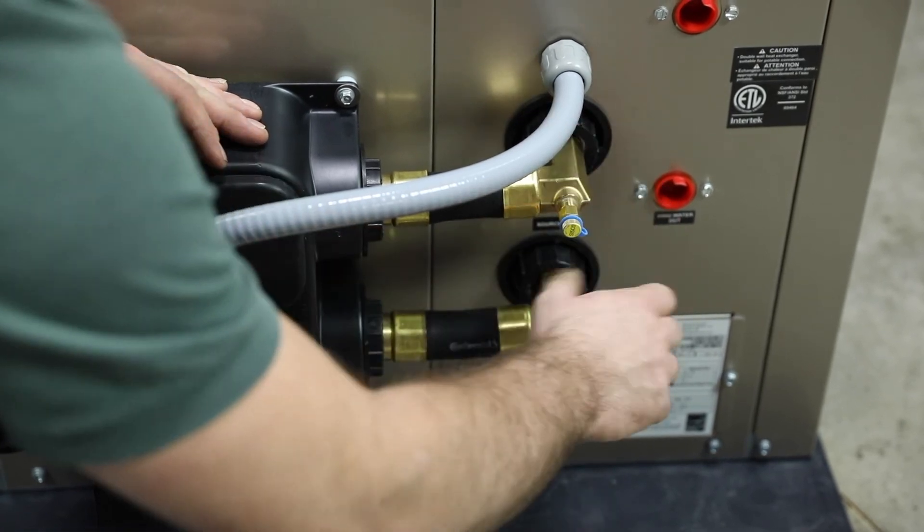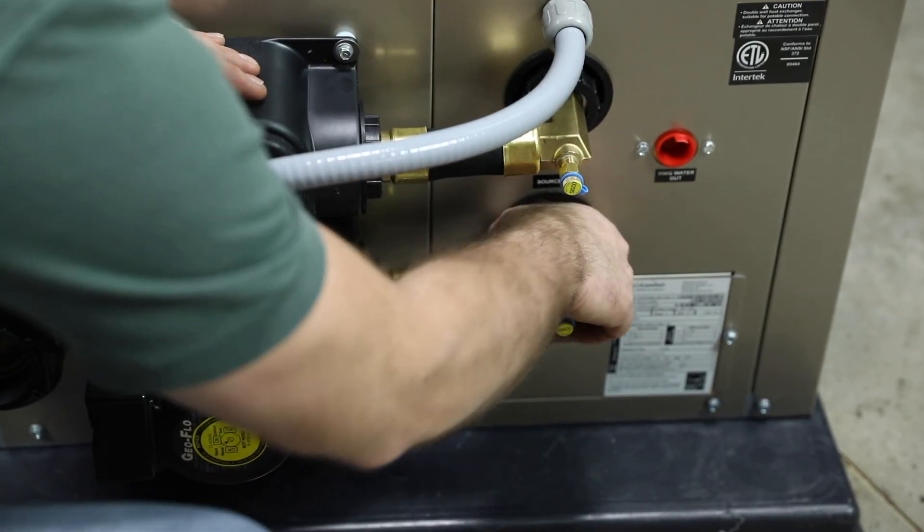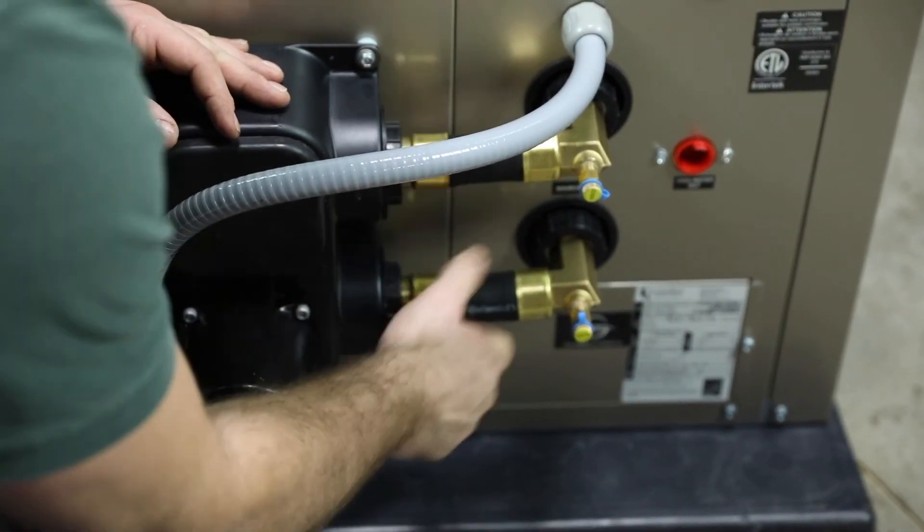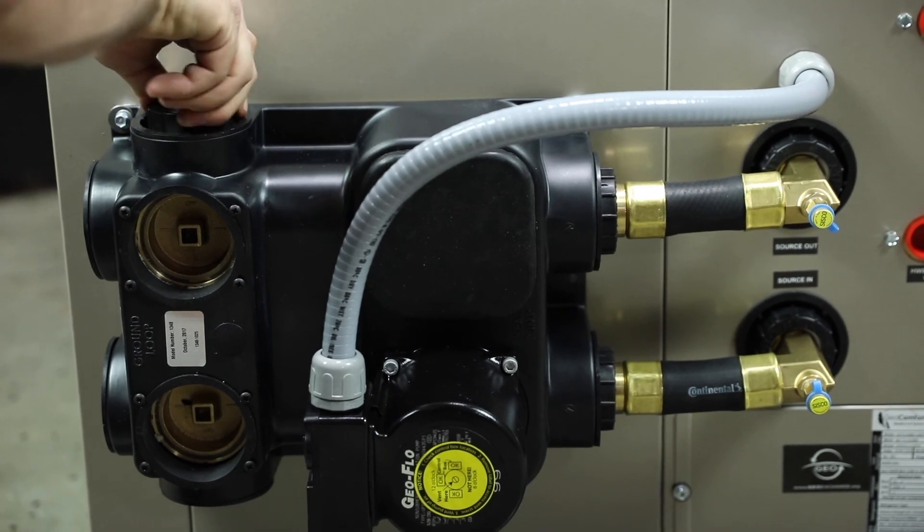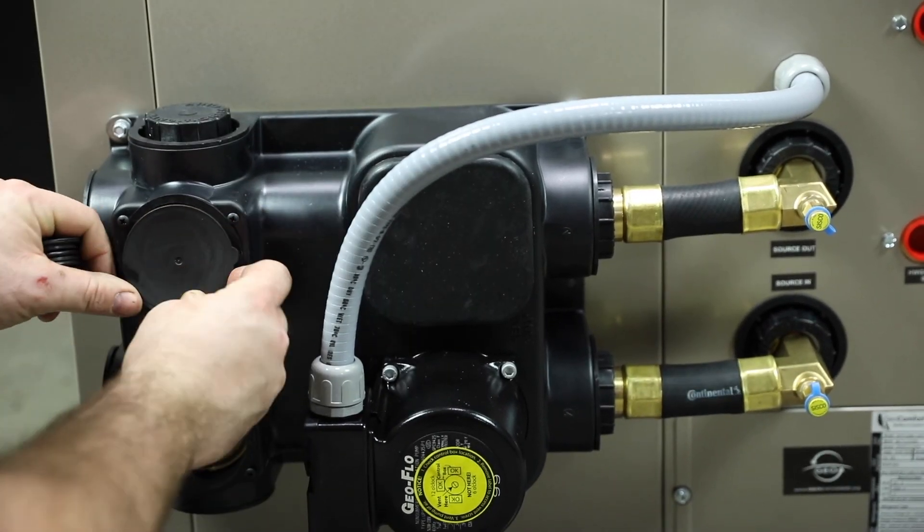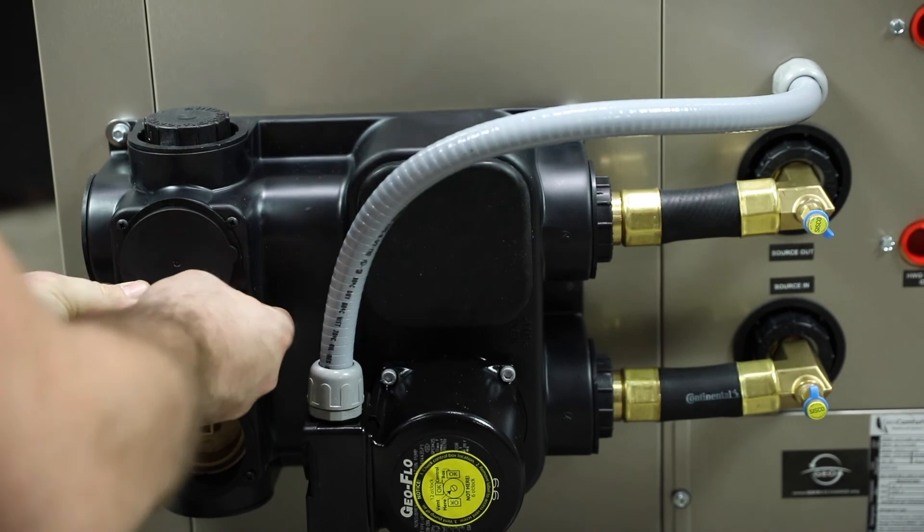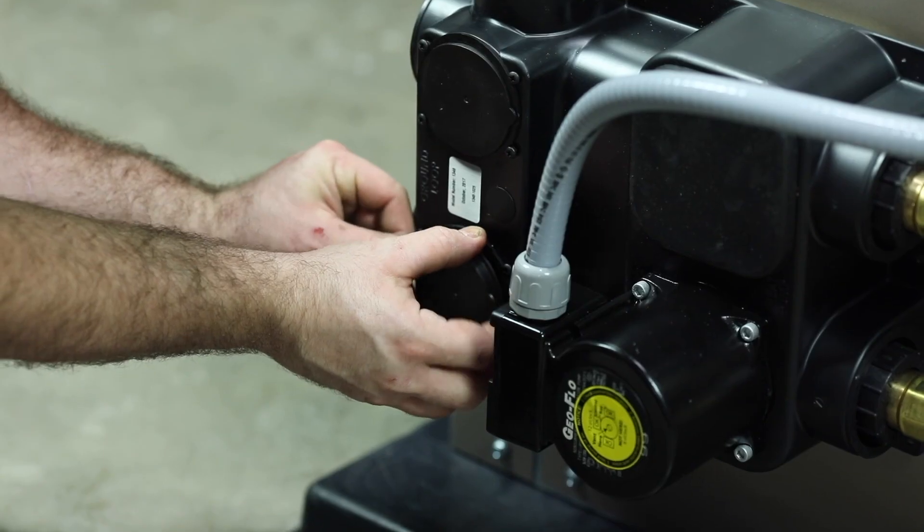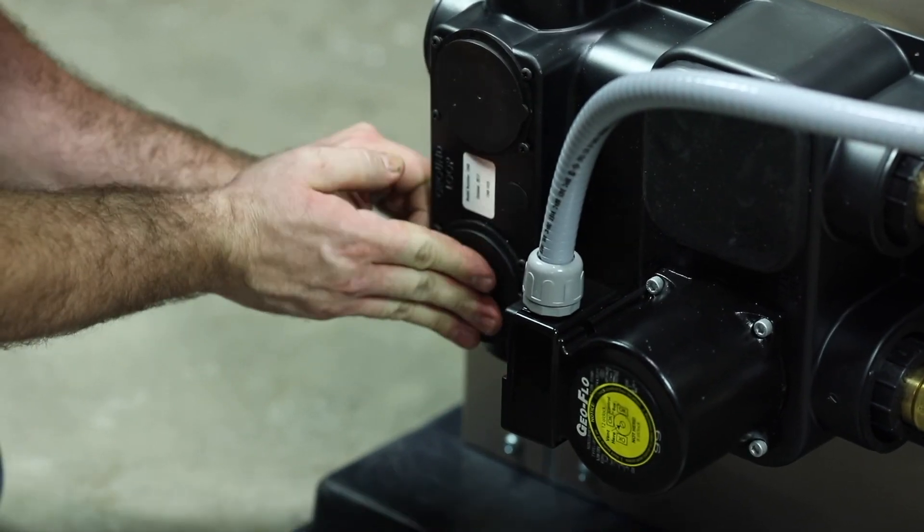Re-inspect and tighten all water connections making sure that they are well connected and properly tightened. This completes the assembling and attachment of our plug-and-play flow center. Refer to the YT unit IOM for further steps needed to complete the installation of the package heat pump.